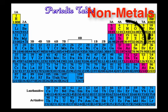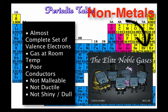Nonmetals are found to the right of the zigzag line on the periodic table. Atoms of most nonmetals have an almost complete set of electrons in their outer level. Atoms of one group of nonmetals, called the noble gases, have a complete set of electrons, with most having eight electrons in their outer energy level. More than half of the nonmetals are gases at room temperature. Nonmetals are also not malleable or ductile, they are not shiny, and are poor conductors of thermal energy and electric current.